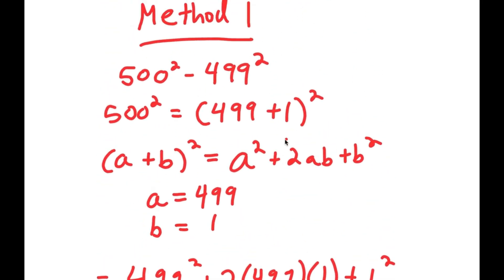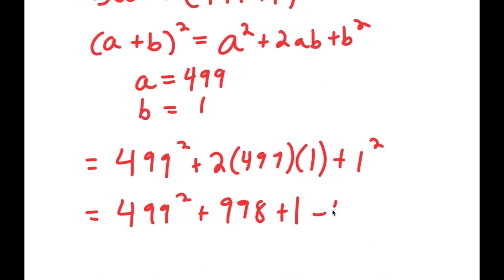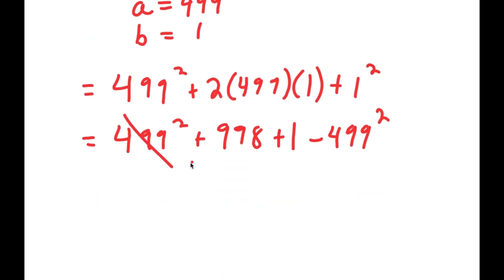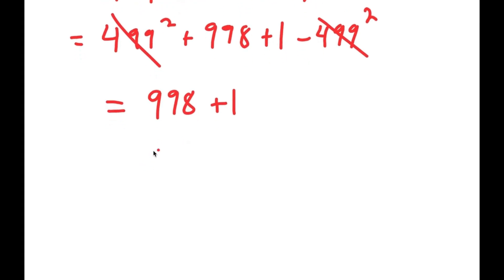And remember, at the end here I have negative 499 squared. So now we can add that back in. 499 squared minus 499 squared — these two cancel out. So I'm left with 998 plus 1, and this is equal to 999.